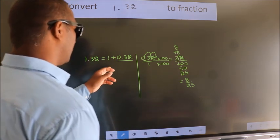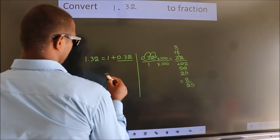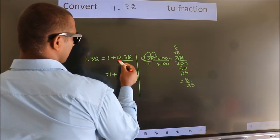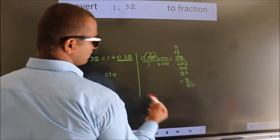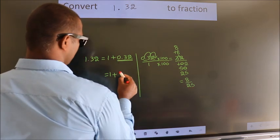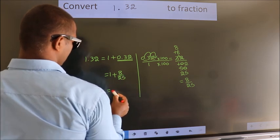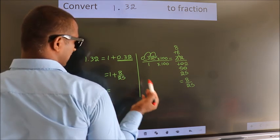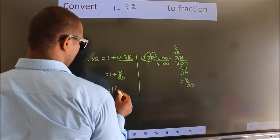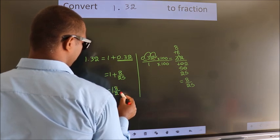Now here, 1 plus, in place of 0.32, I write 8 by 25. So 1 plus 8 by 25 in mixed fraction is 1 and 8 by 25.